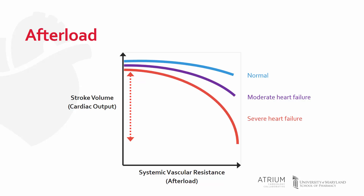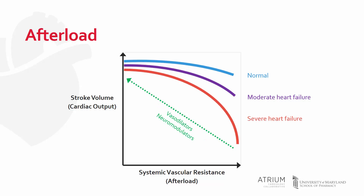Elevations in SVR are common in heart failure due to persistent activation of neurohormonal systems, such as the sympathetic nervous system and the renin-angiotensin-aldosterone system. Afterload can therefore be reduced by using therapies that target these systems, or by the use of direct vasodilators. These reductions in afterload can significantly reduce the amount of work required for the heart to eject blood, therefore improving cardiac output.